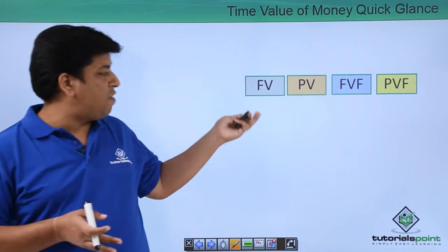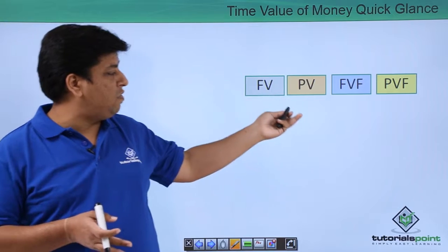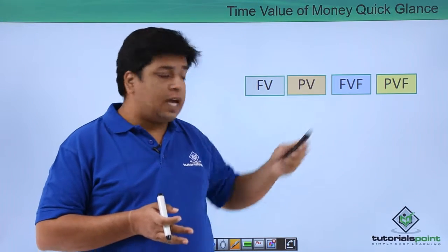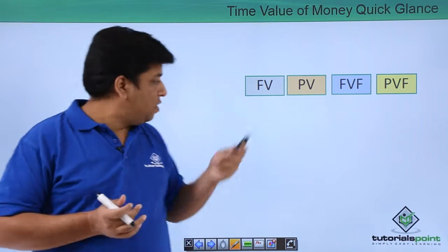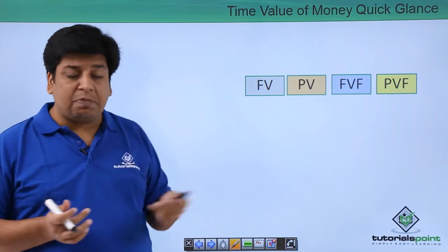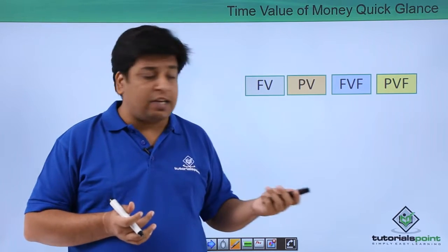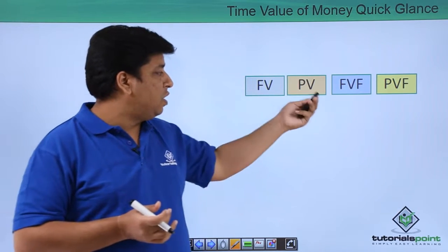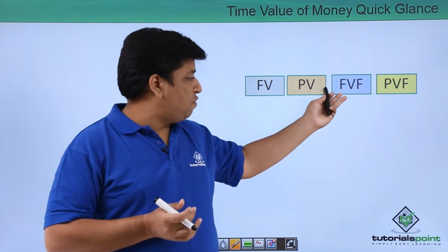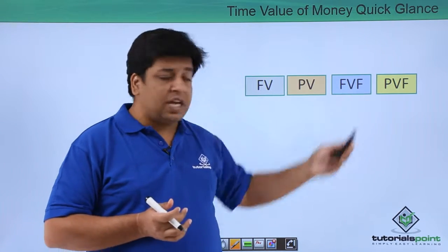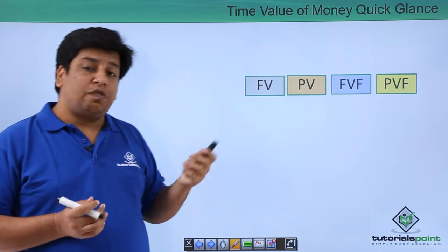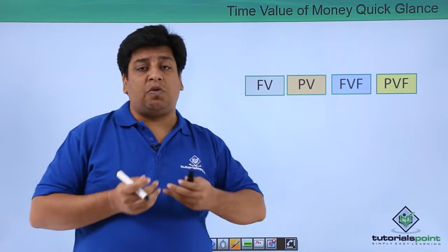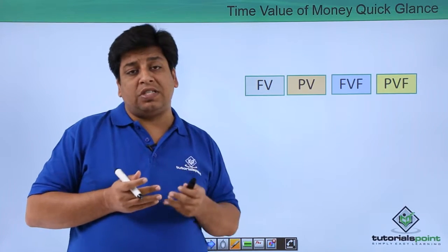The four concepts are FV, PV, FVF, and PVF. FV is future value, PV is present value, FVF is future value factor, and PVF is present value factor. Future value helps us understand what is the value of a particular amount some years down the line.